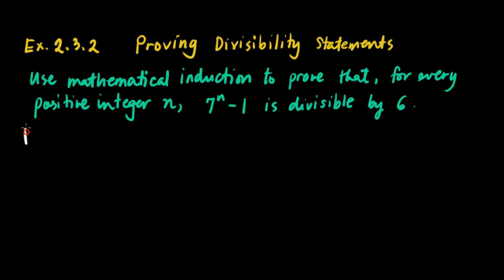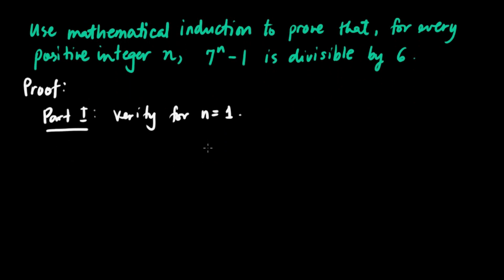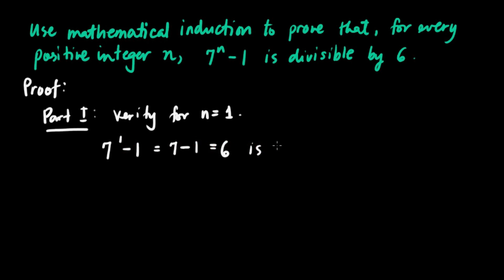Ganun pa rin, we have two parts. For the proof, for part 1, we still verify. We're still going to verify for n equals 1. We start at 1 kasi for every positive integer n. So, 7 raised to 1 minus 1 is equal to 7 minus 1, which is equal to 6. Minus 1 equals 6 — is divisible by 6.